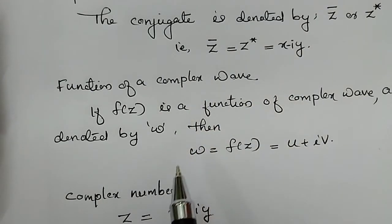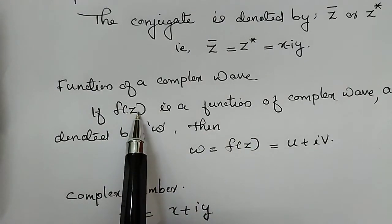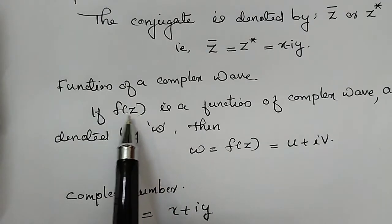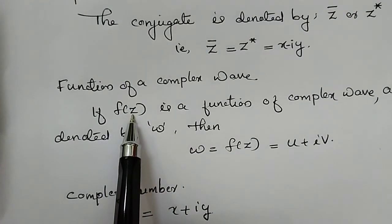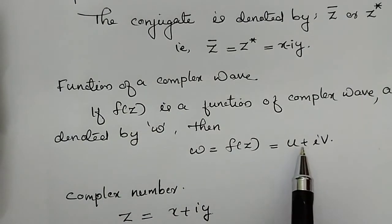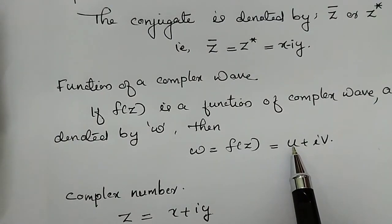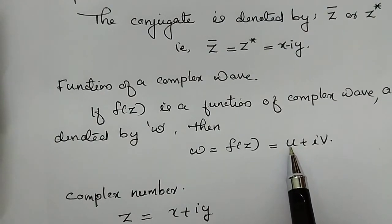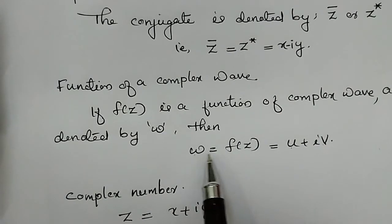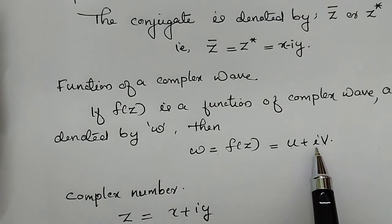Complex number, we have to denote z is the complex number, so f of z means function of the complex number z, and it is also denoted as omega or u plus iv. That is omega equals f of z equals u plus iv. This is the other properties, this is the theorem we will discuss. Thank you.